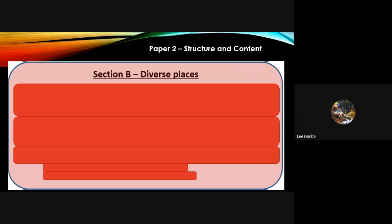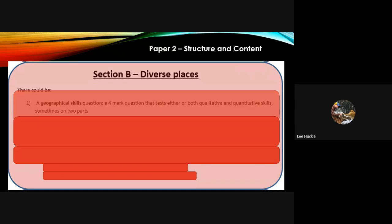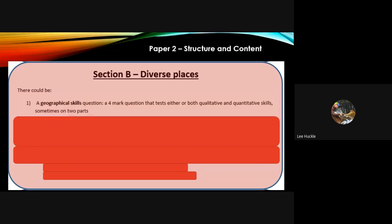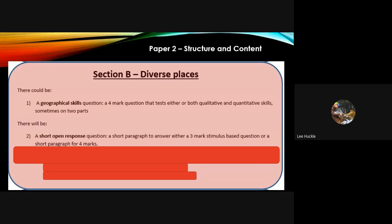Section B then, this is the diverse places section of the paper. As I say, don't even focus on the other part of Section B where you have a choice—we study diverse places. Again, there could be a geographical skills question, four marker, where both qualitative or quantitative skills are being tested. What we know for sure, there will be a short open response, three to four marks, stimulus based.